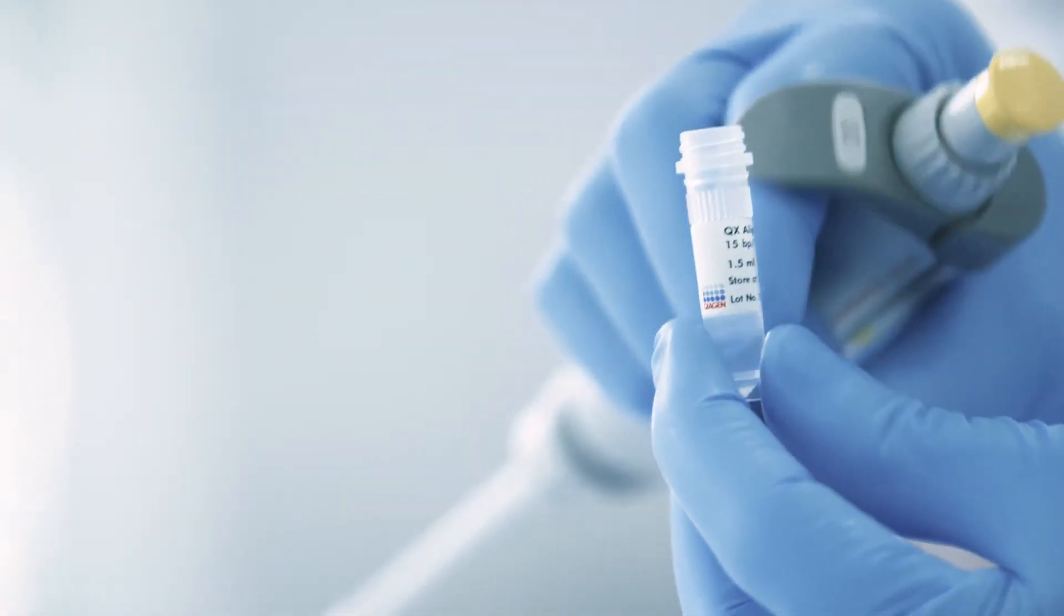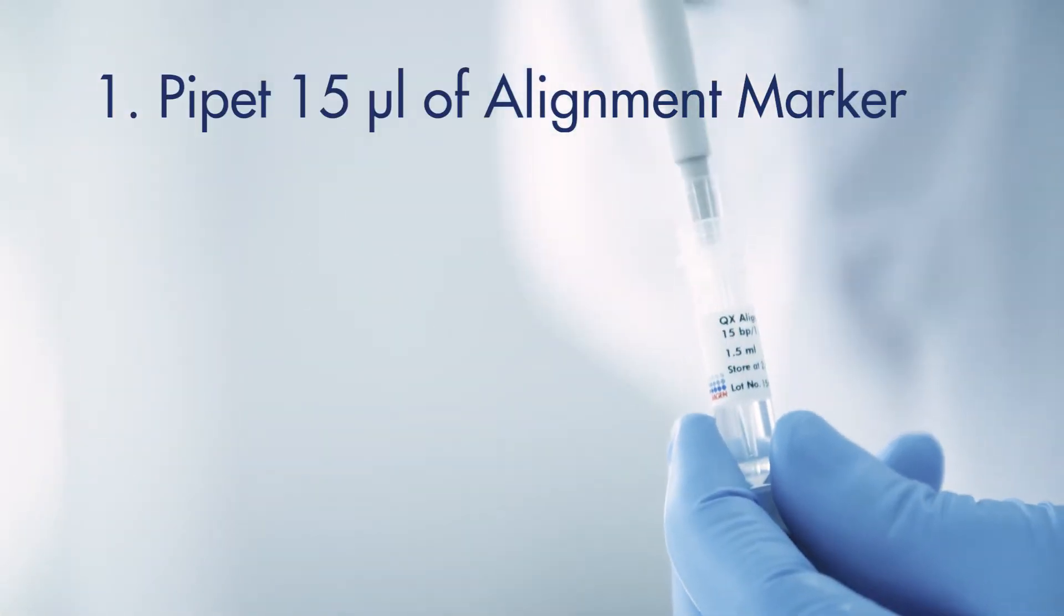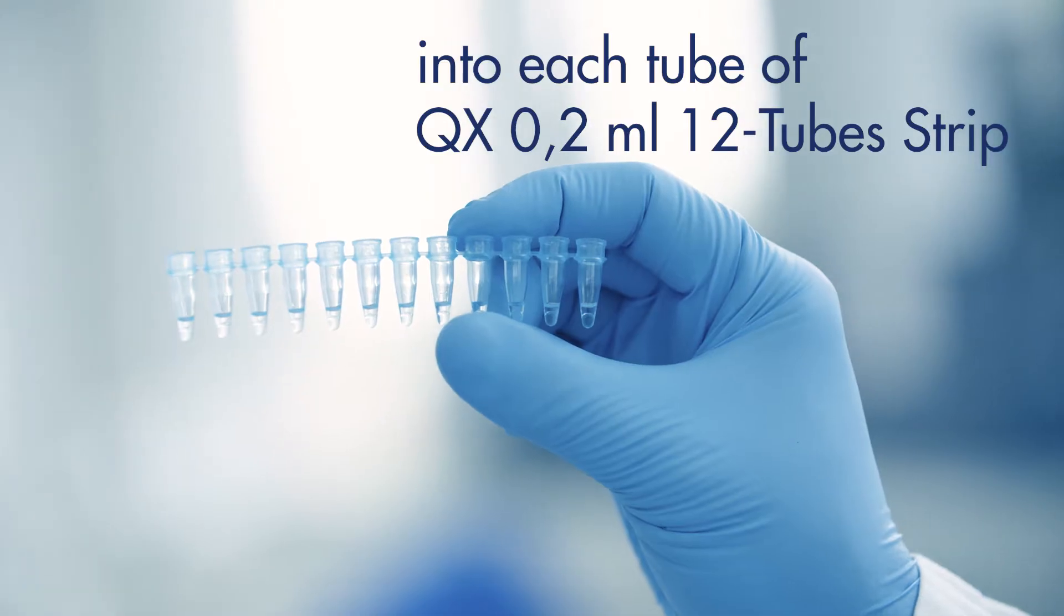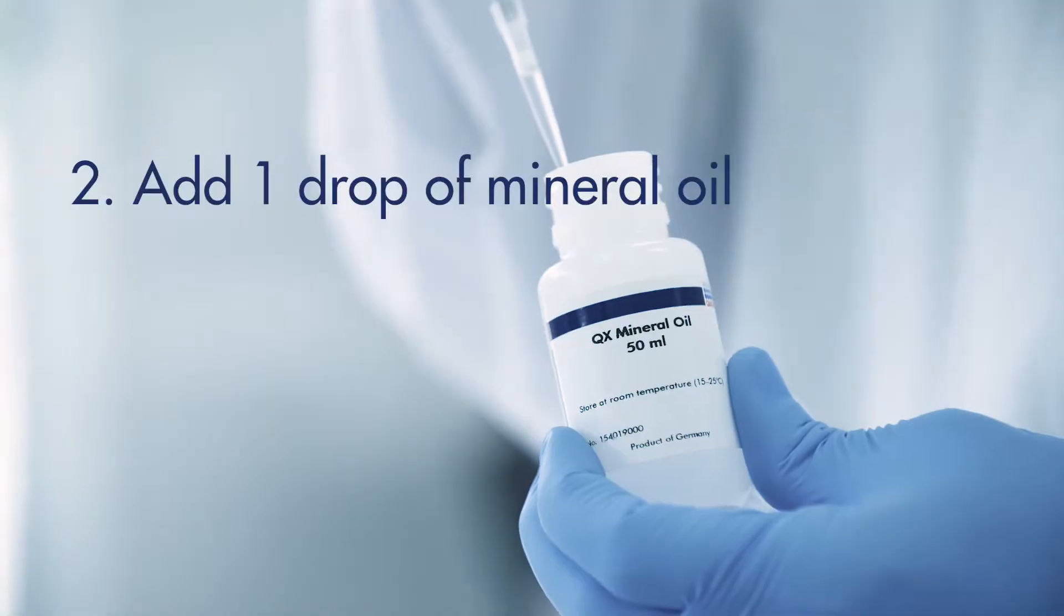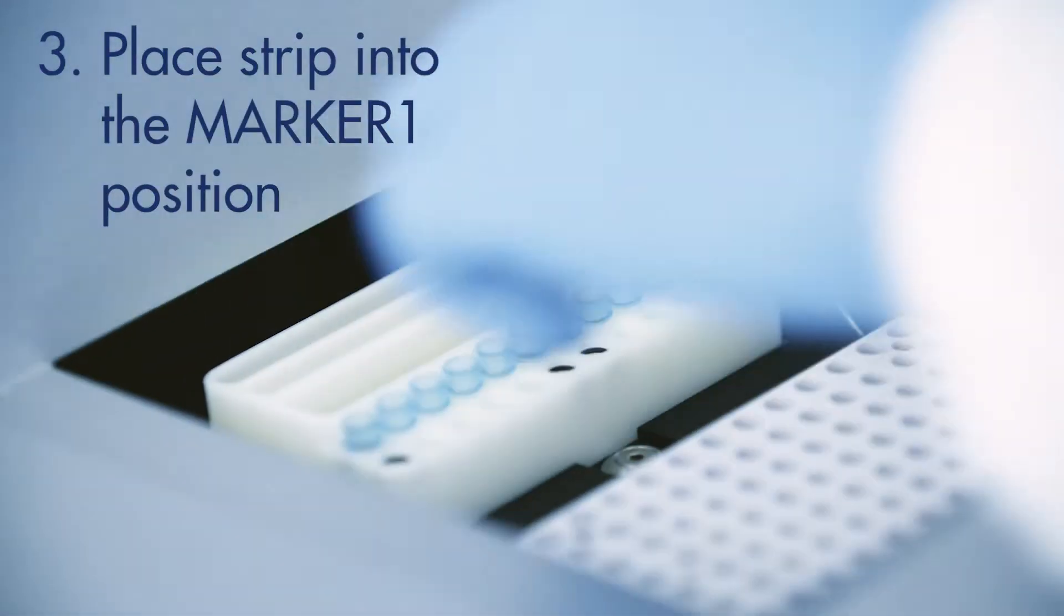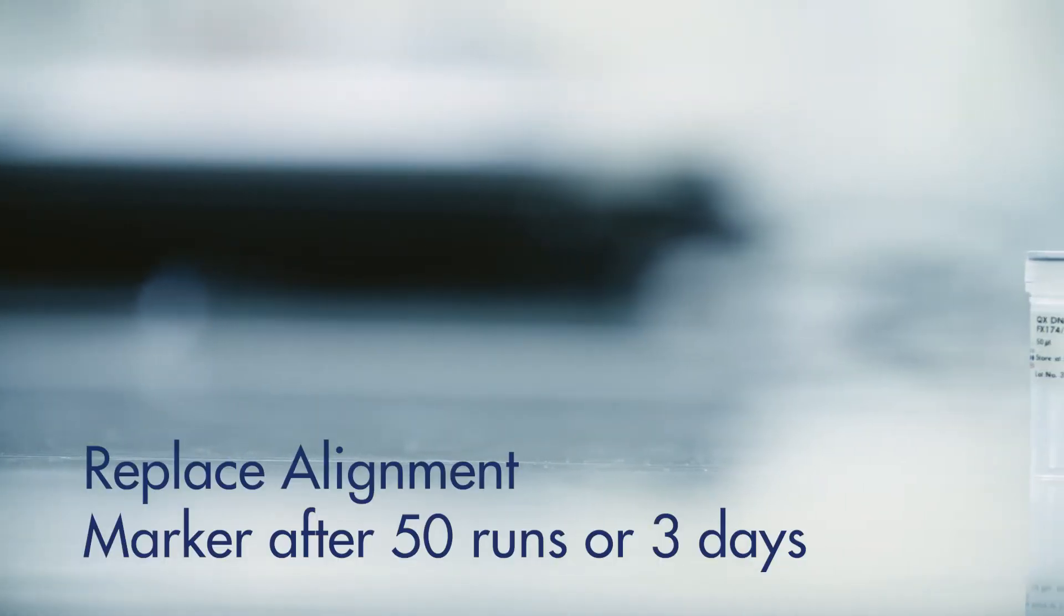To prepare the alignment marker, load 15 microliters of alignment marker into each tube of a QX 0.2 milliliter 12-tube strip. Add one drop of mineral oil to each tube and place the strip into the marker 1 position of the buffer tray. The alignment marker should be replaced after 50 runs or 3 days, whichever happens first.